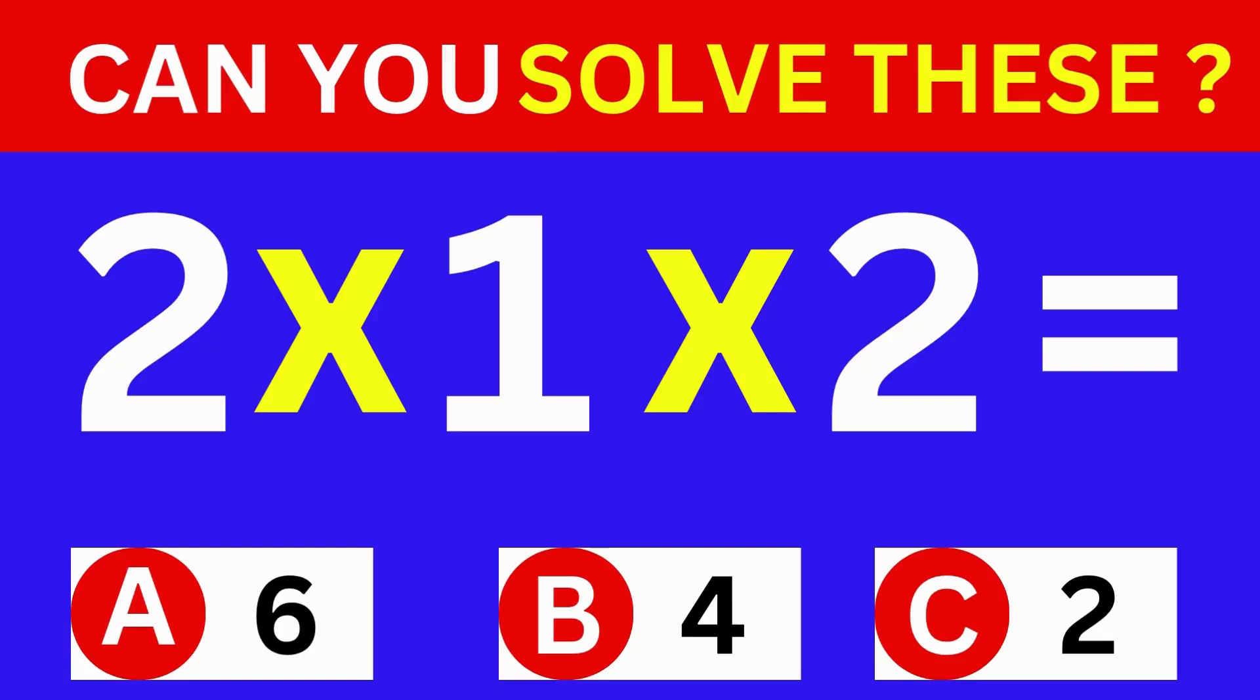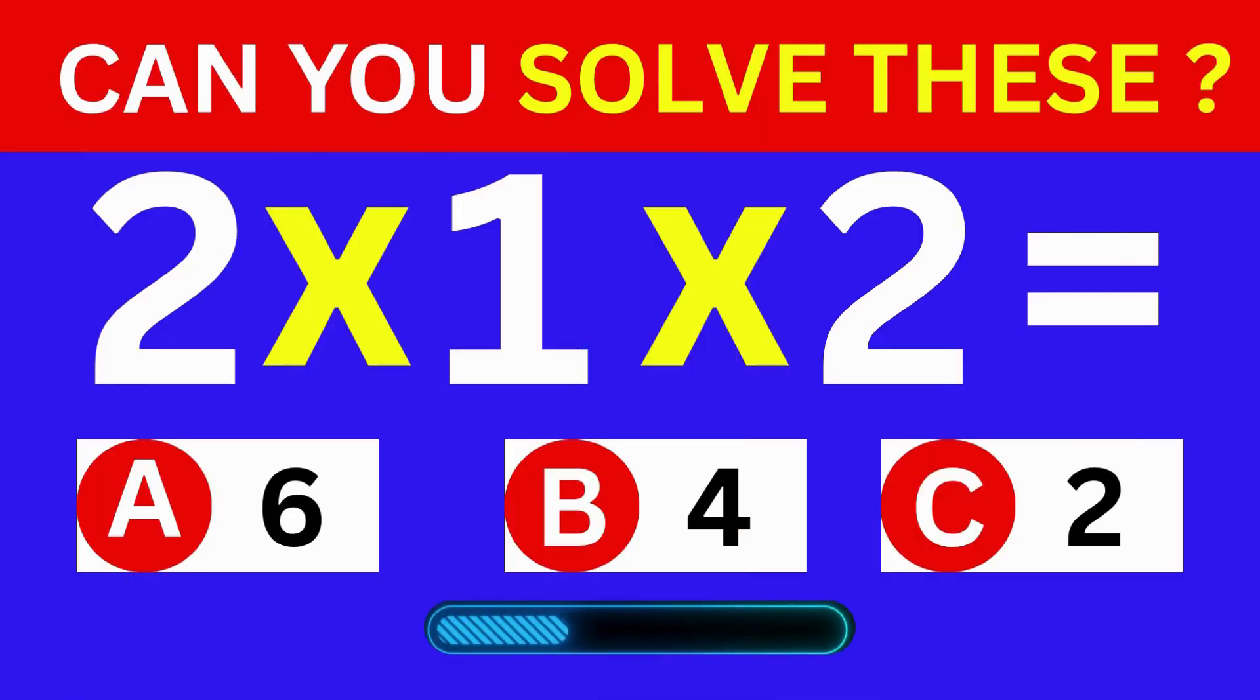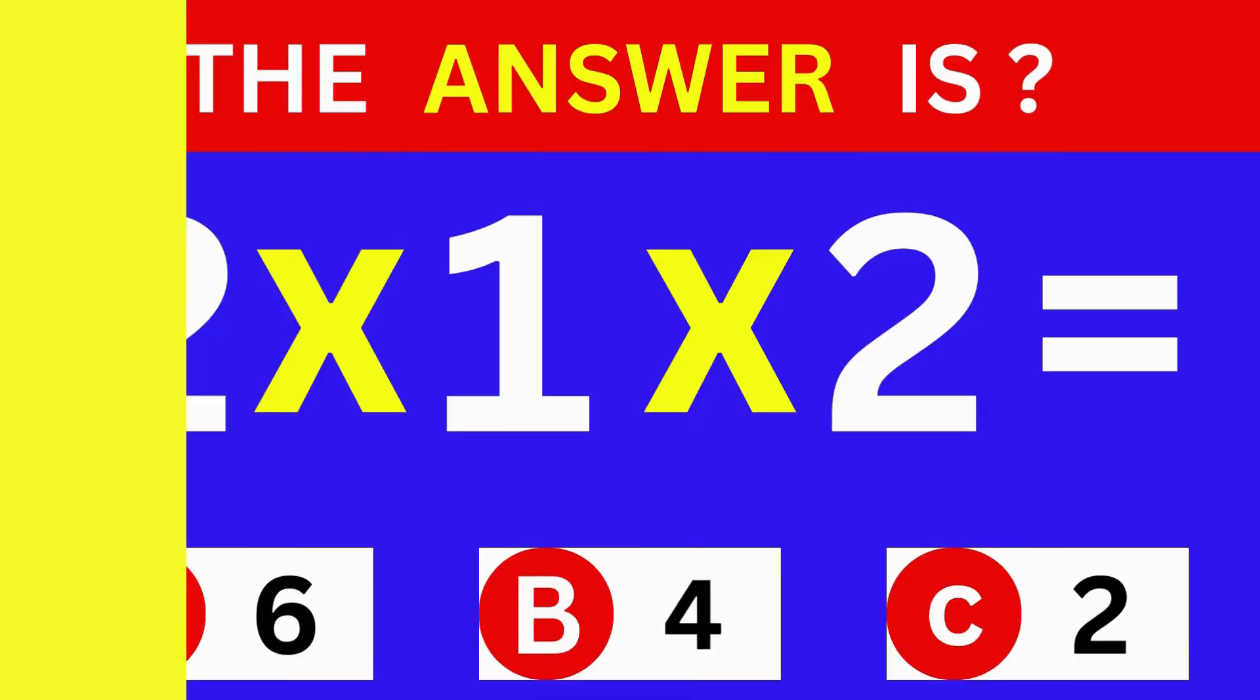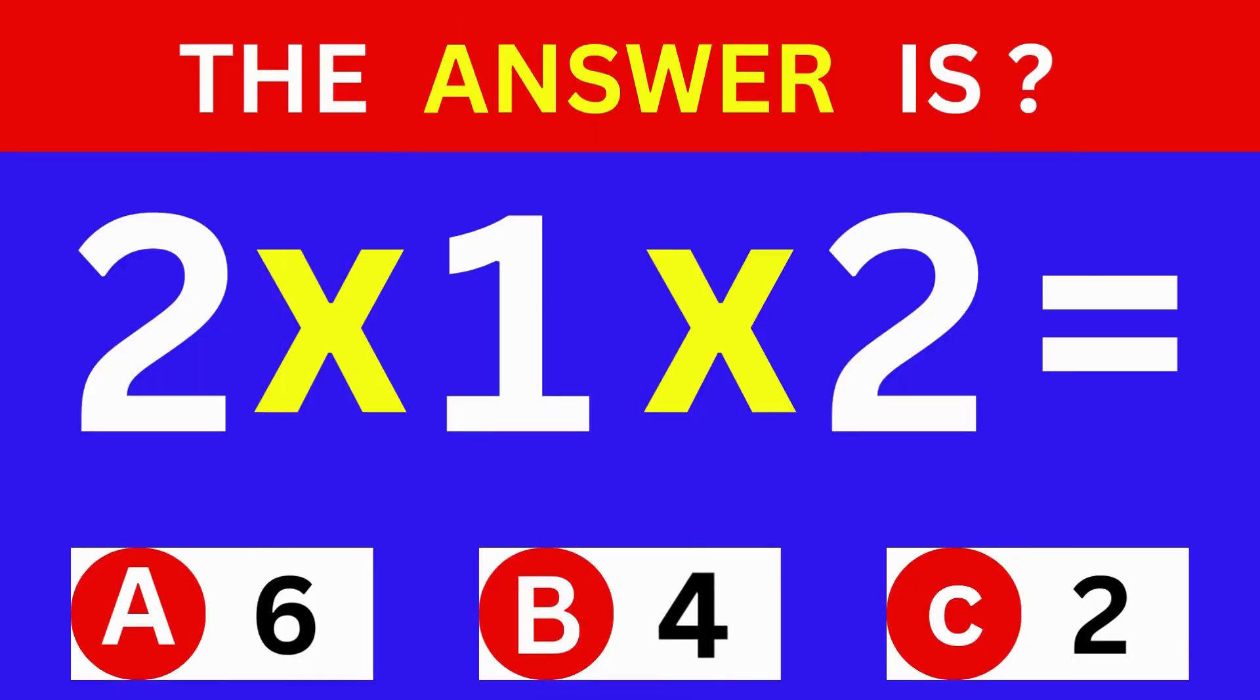2 times 1 times 2 equals. A: 6, B: 4, C: 2. The answer is option B, 4.